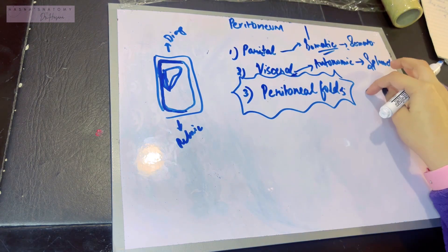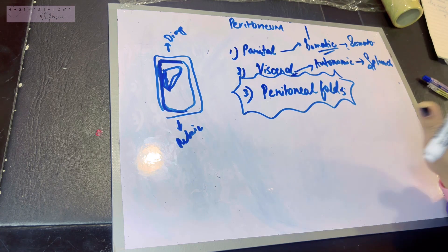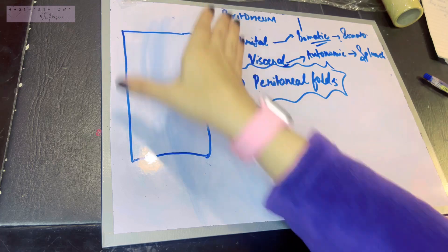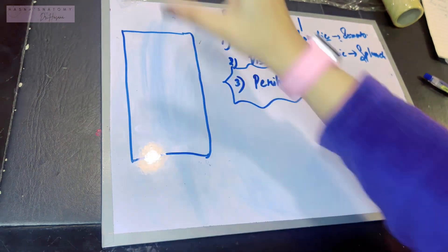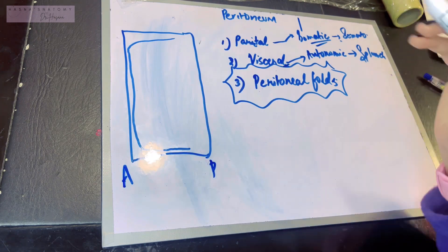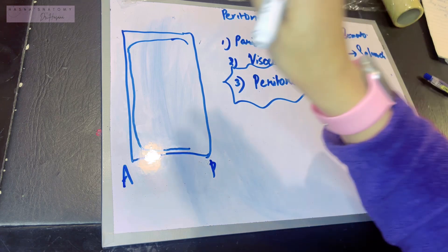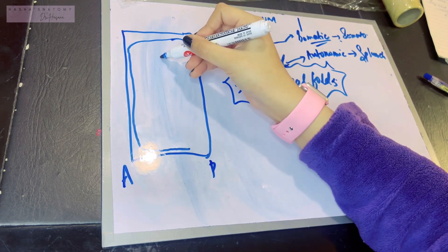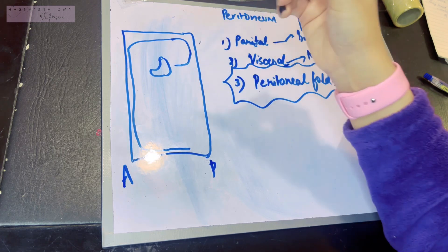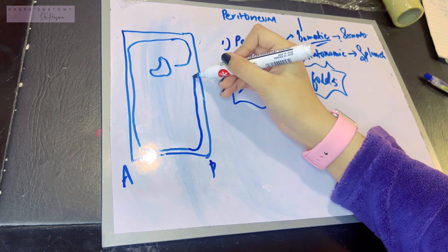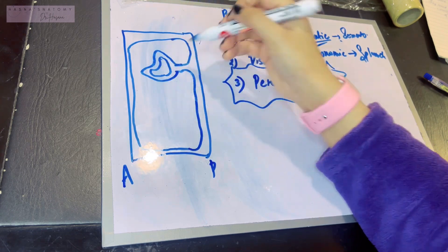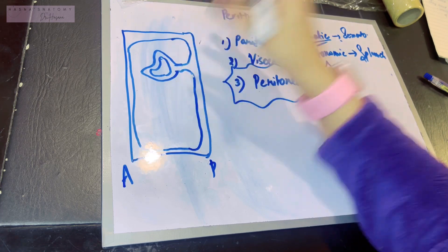Now let's dive into the concept of the peritoneal folds. This is the side view — I'm cutting the human being from the middle in the median plane and viewing from the side. You know that the parietal peritoneum covers your abdominal walls. What's happening is that the peritoneum has folds, meaning the organs within the peritoneum — like suppose this is the stomach — are suspended within the abdominal cavity via these folds.